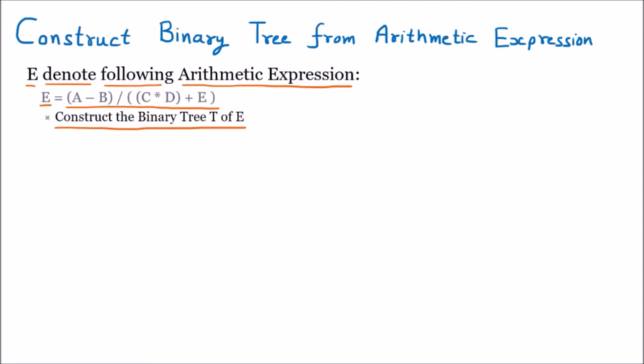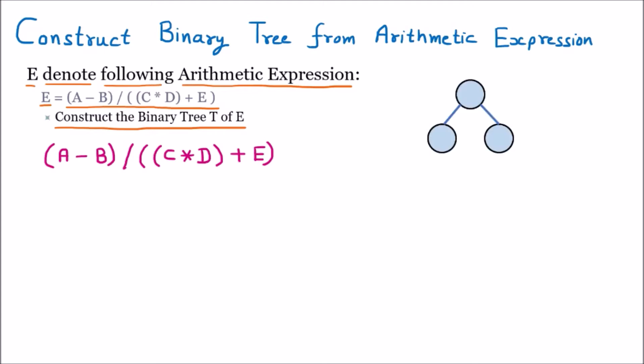Now, how to construct the tree? First we need to understand the terminology of the binary tree. The tree always has a parent node with left and right children. Sometimes only the right or only the left child can be there, or it may not be there at all, because a binary tree means a maximum of two children — it can have zero, one, or two children.